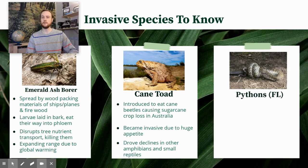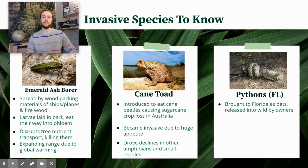A final example that we mentioned earlier was the Burmese python, specifically in Florida and the Everglades, where it's become very invasive. As mentioned earlier, it was brought in through the exotic pet trade, and then people that had these snakes as pets started wanting to get rid of them and released them into the Everglades.